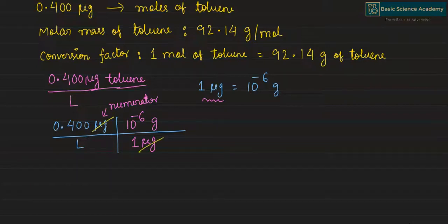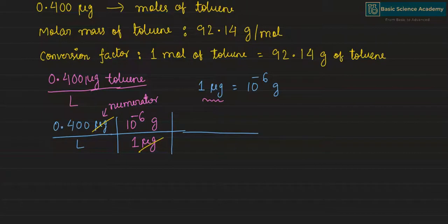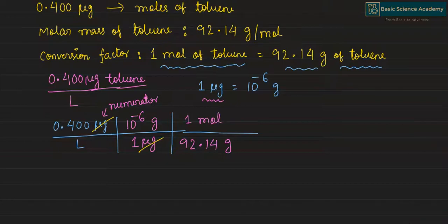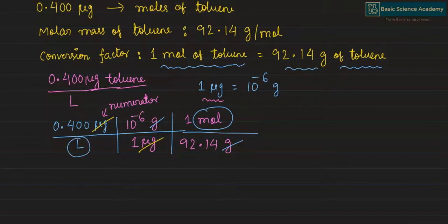We cancel out microgram and microgram to give grams of solute. Now we have converted micrograms to grams. The next step is to convert grams into moles using the conversion factor 1 mole of toluene equals 92.14 grams. Since grams is in the numerator, we keep 92.14 grams in the denominator, so grams cancel out, leaving moles per liter.